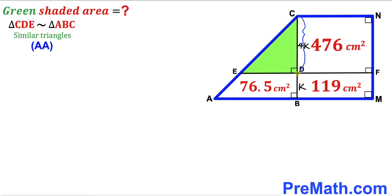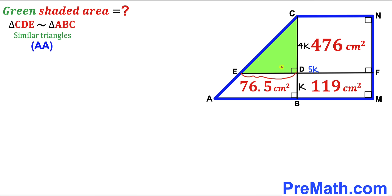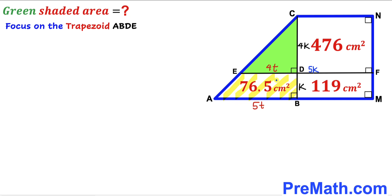The side length of the green triangle CDE is 4k and the side length of the big triangle ABC is 4k + k = 5k. Therefore the ratio between the two triangles is 4k to 5k. Since both triangles are similar, if we label one side of the green triangle as 4t, then the corresponding side of the bigger triangle is 5t.